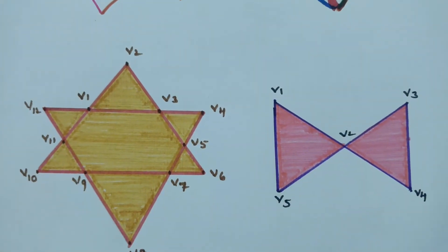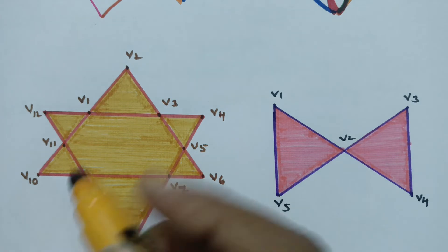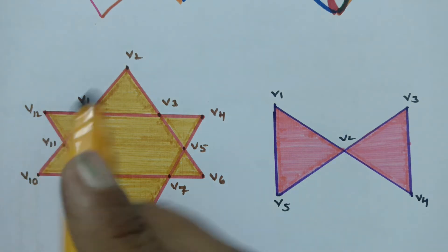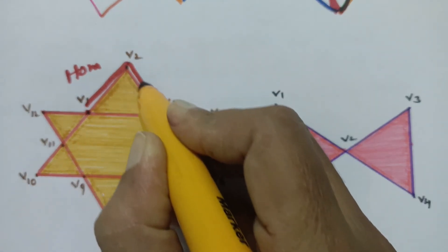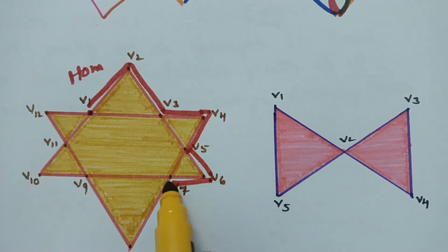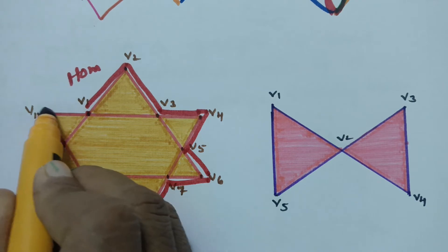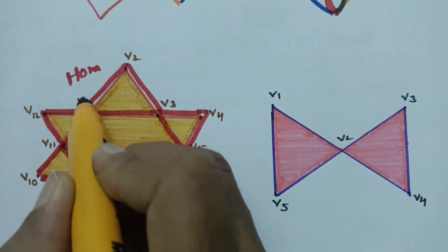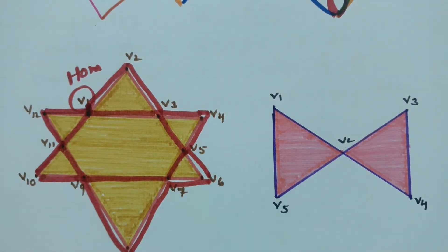Next graph has many vertices: V1 through V12. Considering V1 as home, traversing V1 to V2, V2 to V3, V3 to V4, then V5, V6, V7, V8, V9, V10, V11, V12 and back to V1. Covering all edges and returning to the same home V1 — therefore it has a Euler circuit.